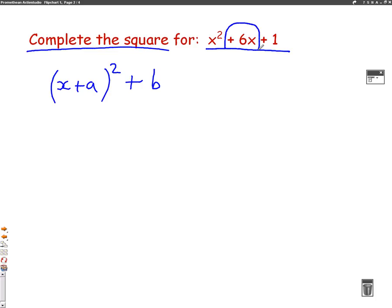Because when we make this into a double bracket, we just need to halve this number here, the plus 6. So our bracket squared will be x at the front, and the plus 6x will now become plus 3, because we've halved it.